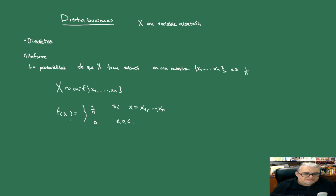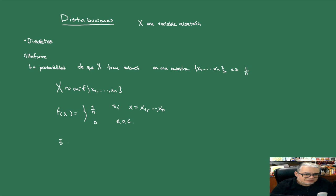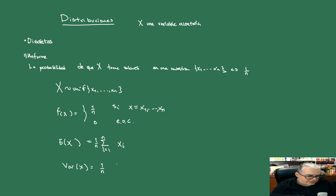Es una distribución equiprobable — que nuestra variable aleatoria tome cualquiera de estos n valores discretos. La esperanza, que damos que era el promedio aritmético, tomamos 1/n por cada valor xᵧ, sumando desde y=1 hasta n. Y la varianza de X es tomar los momentos centrales de orden 2: la suma de (xᵧ − promedio)² desde y=1 hasta n. Este es lo más sencillo.